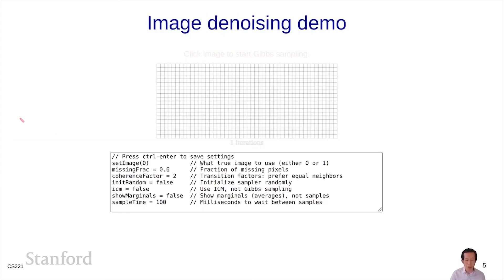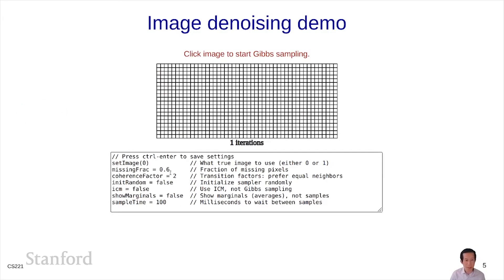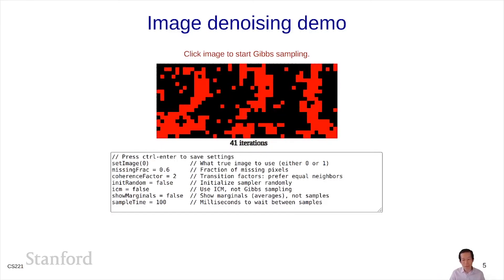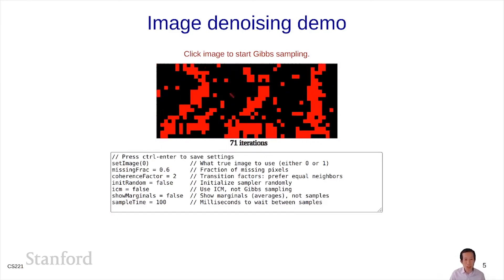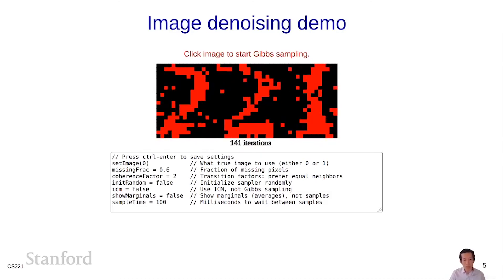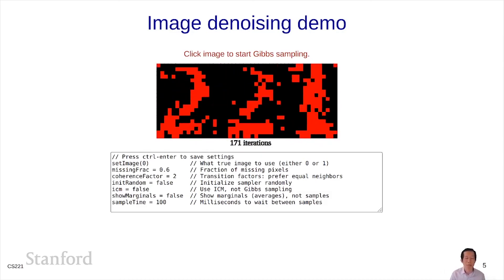Here is a fun little demo of Gibbs sampling for image denoising that runs in your browser. Here is an image. If you hit control enter here, you'll see that this is the input to the system. We have black pixels and red pixels, these are the observed pixels. White pixels are unobserved, and these are the ones that we want to fill in. If you click here, you can get a feeling for what Gibbs sampling is doing. Each iteration is a full pass over all the pixels. You can see that it's kind of dancing around because it's trying to explore different assignments.